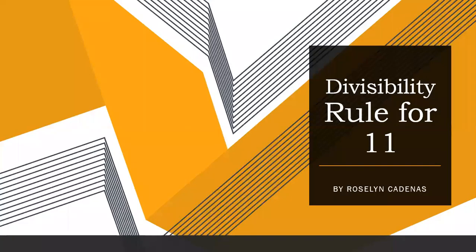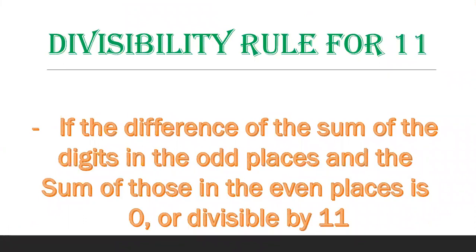Our topic for today is all about the divisibility rule for 11. If the difference of the sum of the digits in the odd places and the sum of those in the even places is 0 or divisible by 11, then the number is divisible by 11. For example, consider 583.